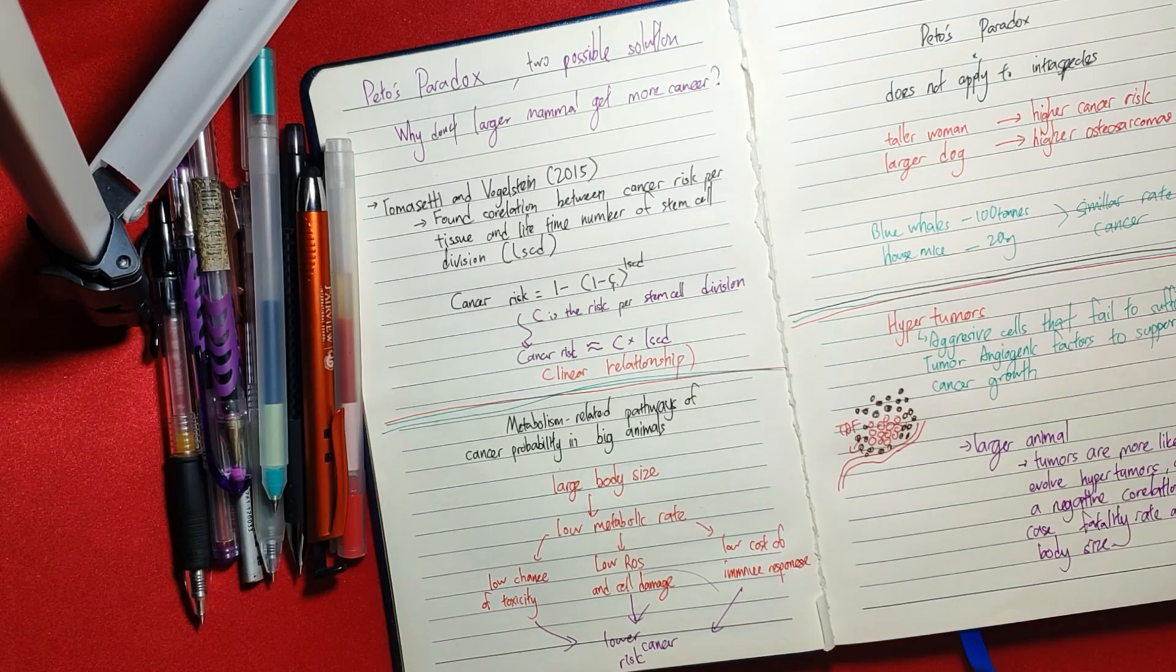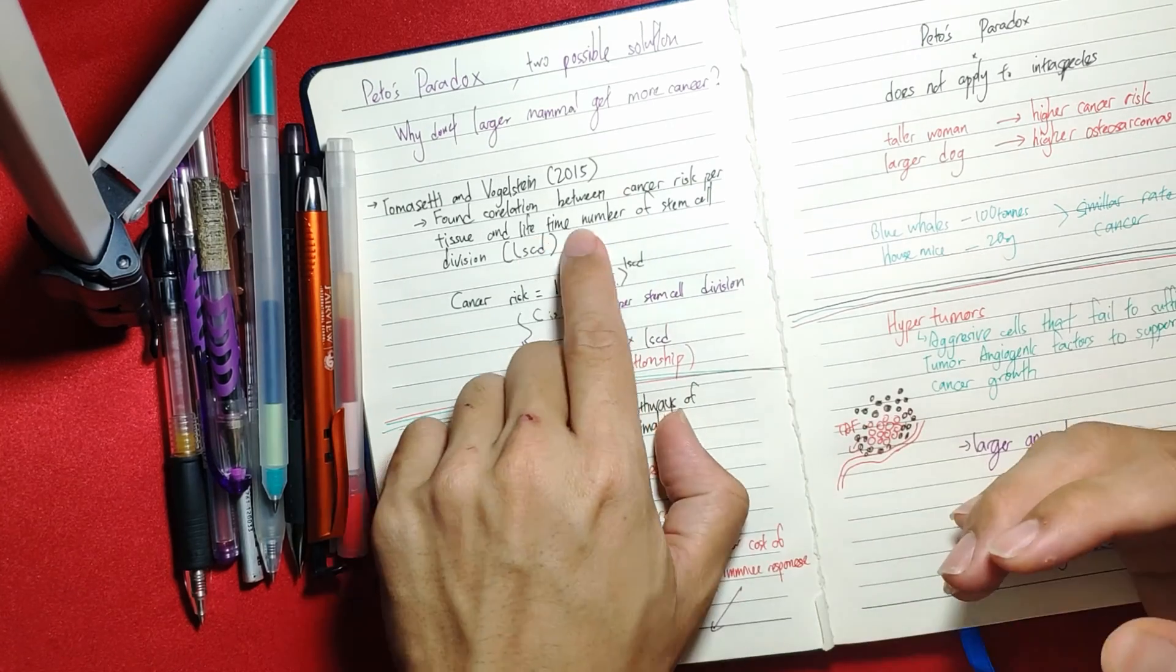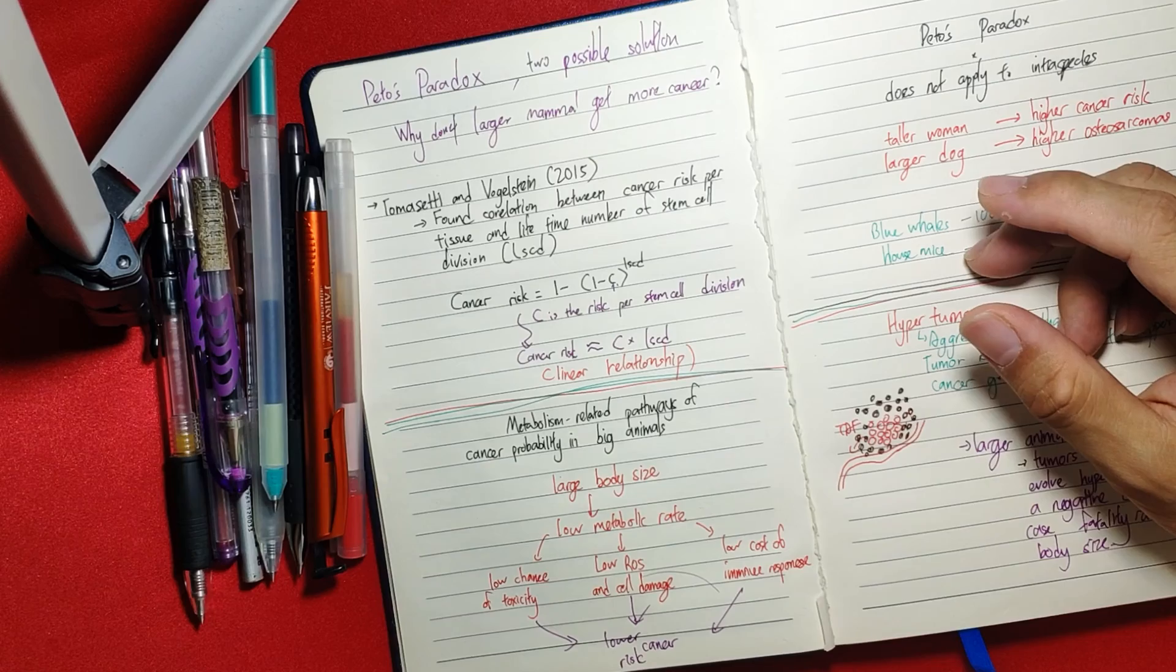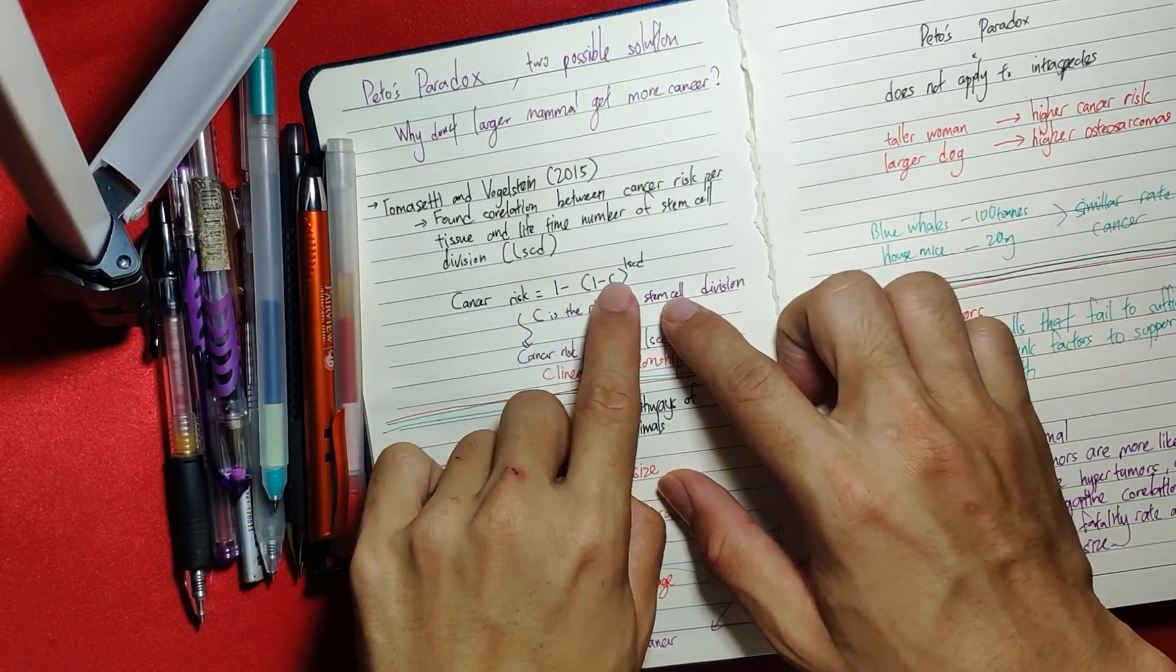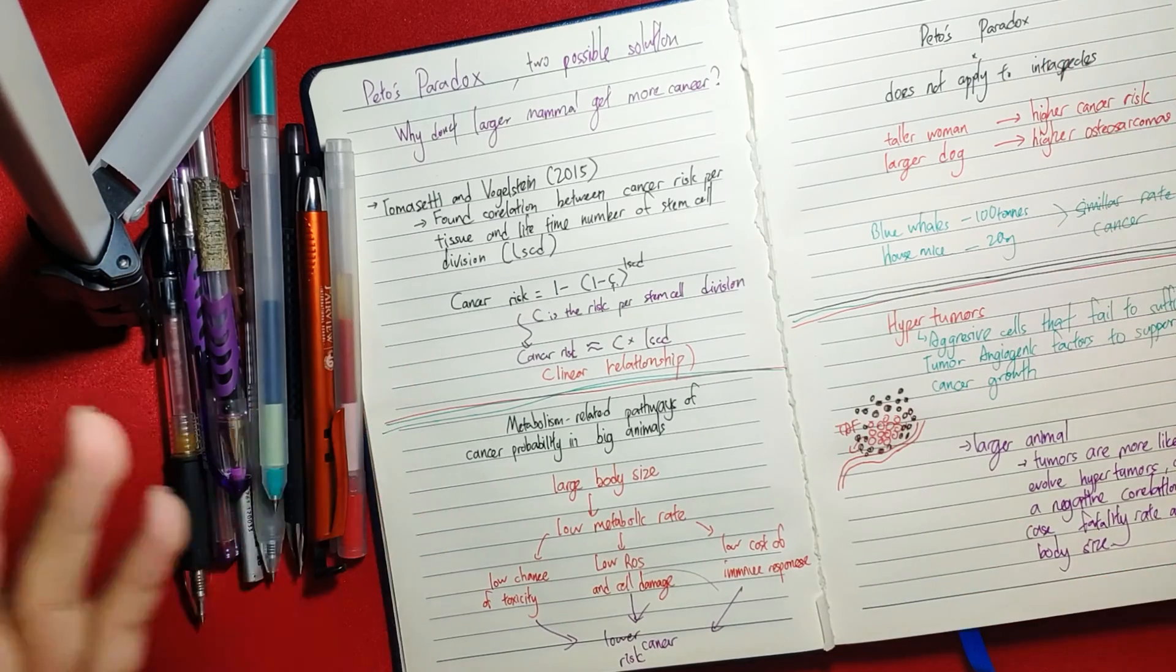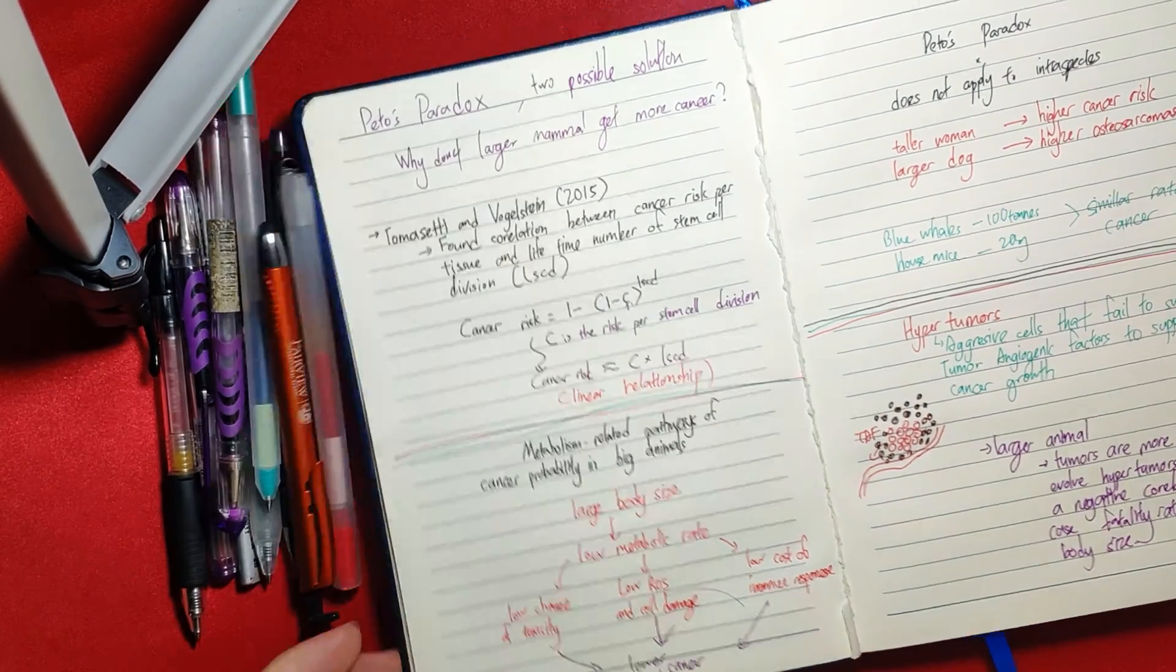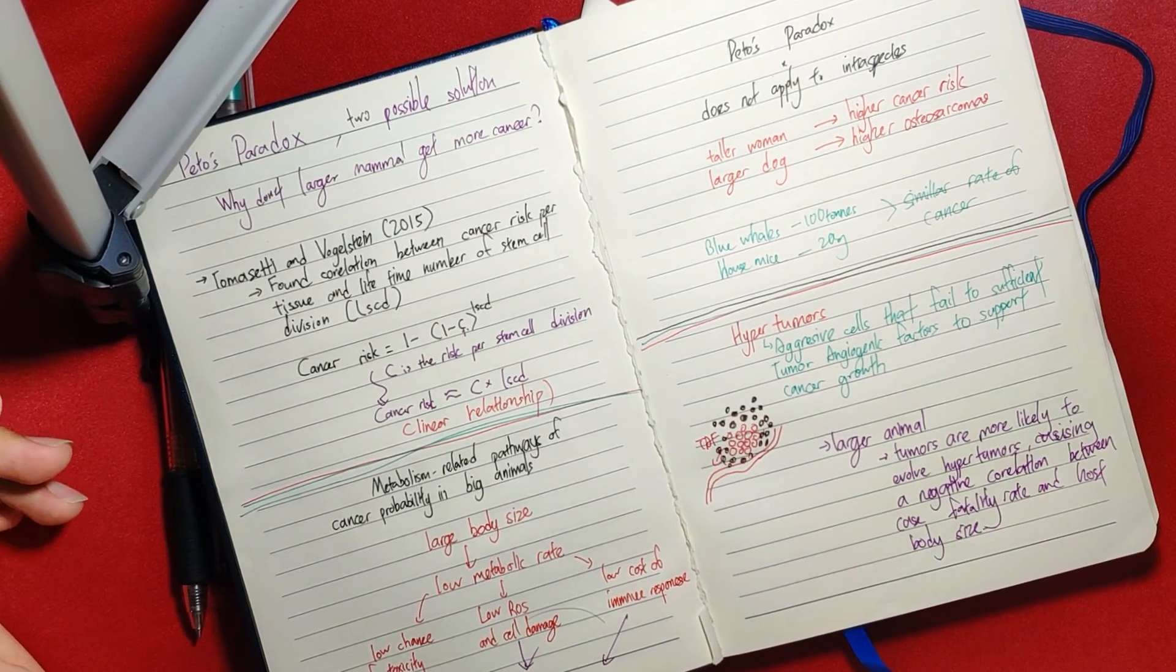That's why the cancer risk equals minus one minus bracket one minus C to the power of LSCD, where LSCD is the lifetime number of stem cell divisions. The more divisions there are, the more likely it's going to get cancer. If you work the equation out, cancer risk is directly correlated with the number of cell divisions in a linear or exponential relationship depending on the situation.